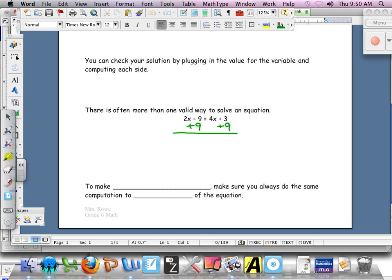Try adding 9 to each side. What do you get? What's our new equivalent equation when you add 9 to each side? 2x minus 18? Nope. Minus 9 plus 9. That's the whole reason we're trying to get rid of it. So 2x equals 4x plus 12. Excellent. 4x plus 12.